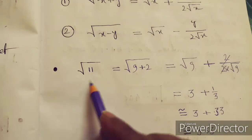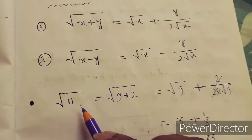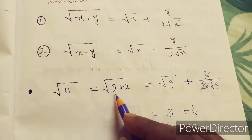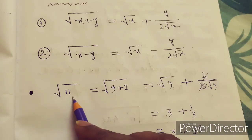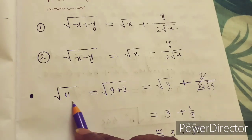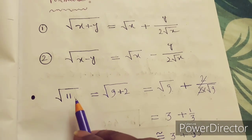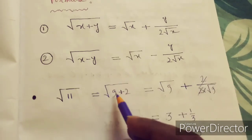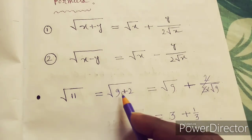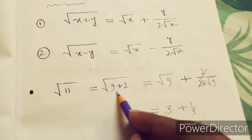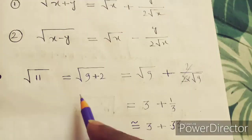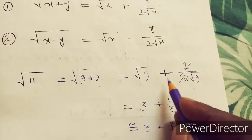Now find √11. We can break 11 as 9+2. Notice that 9 is the nearest perfect square to 11. If we broke it as 8+3, we'd compare — 9 is nearer to 11. So we write √(9+2), and this number 9 should be a perfect square. So √(9+2) means √9 plus...